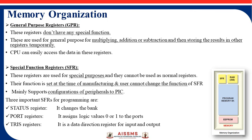General purpose registers, as the name suggests, don't have any special function — they are used for general purposes. You can use them for temporary multiplication, addition, or subtraction variables in your program. For example, C = A + B. Temporary variables are stored in general purpose registers, and the CPU can easily access data from these registers.